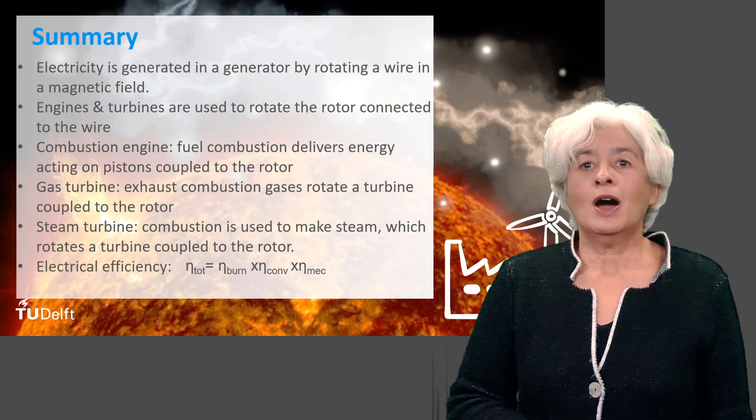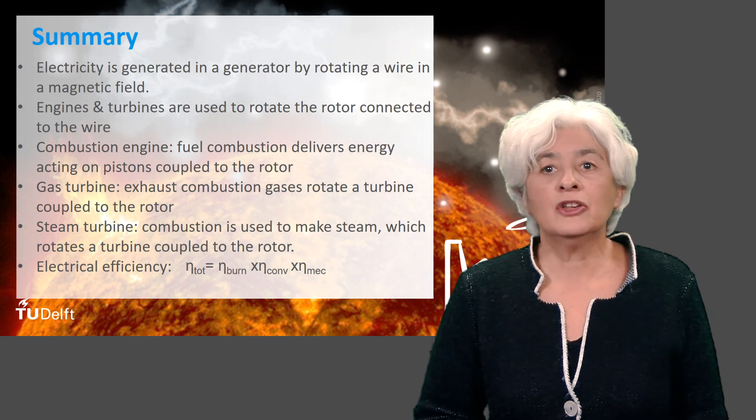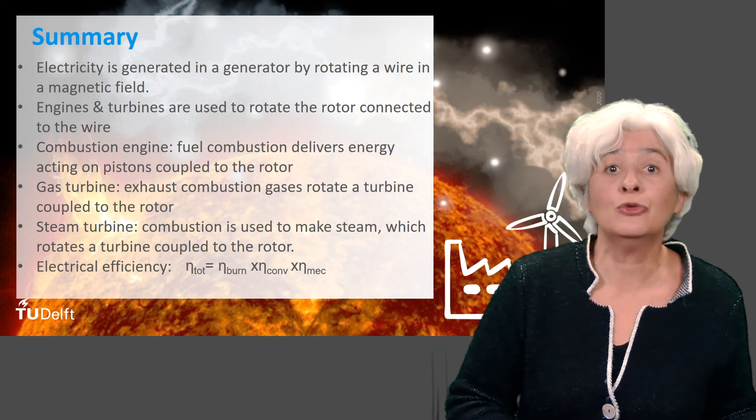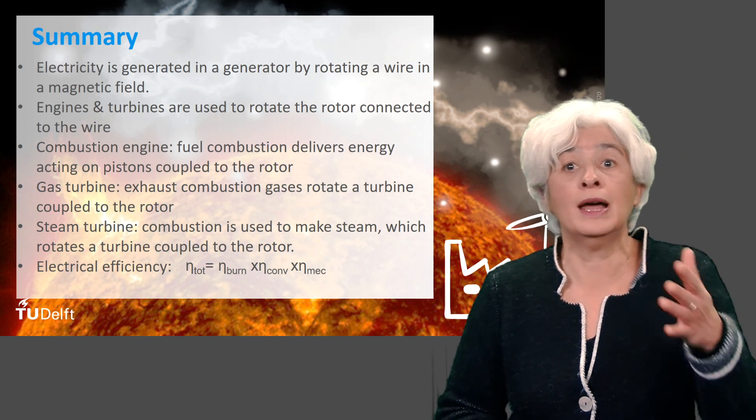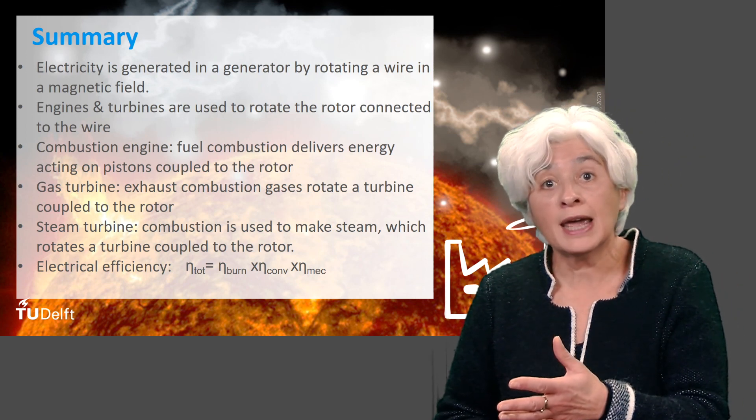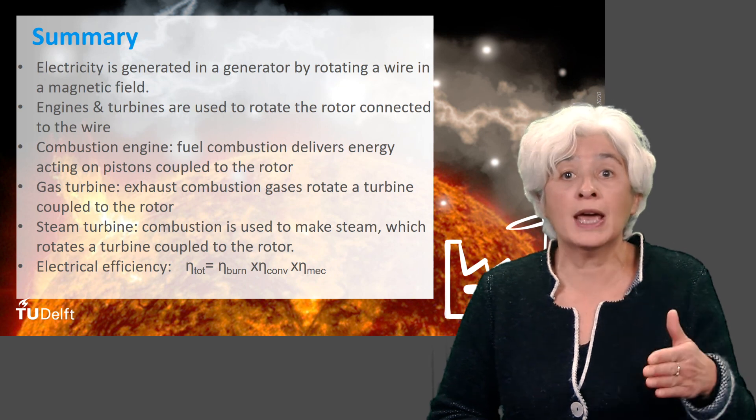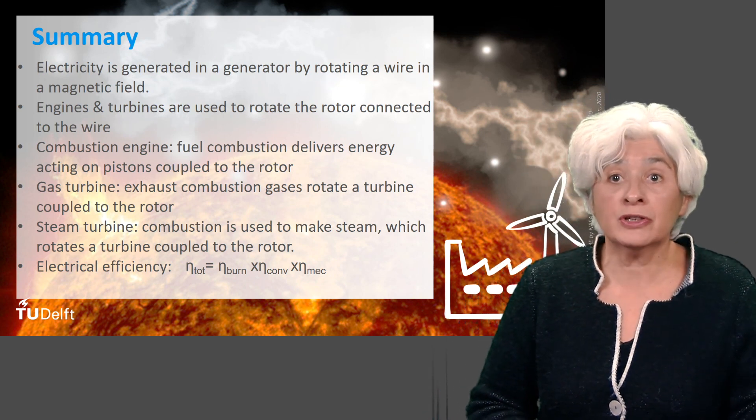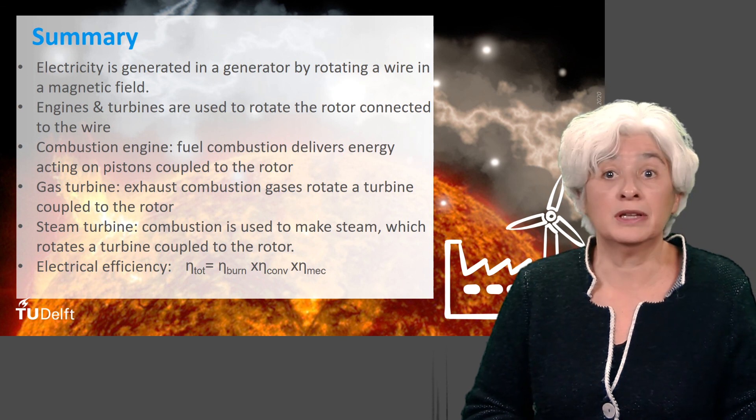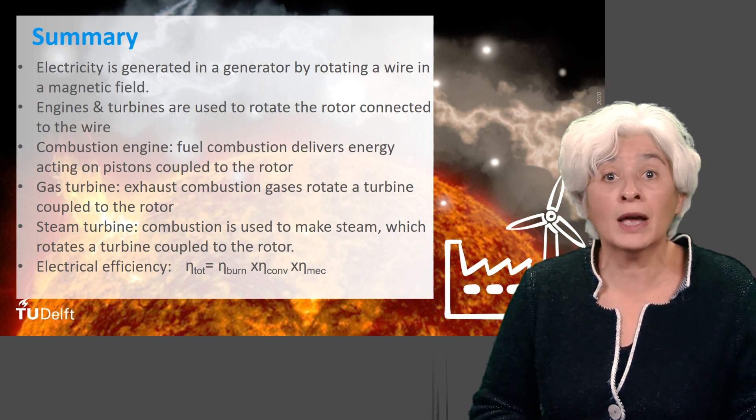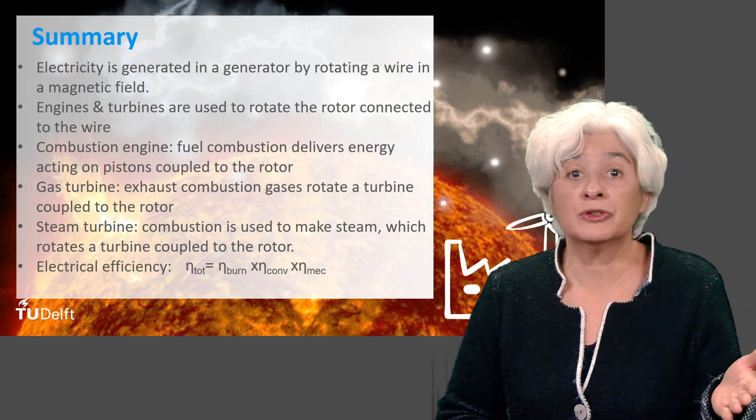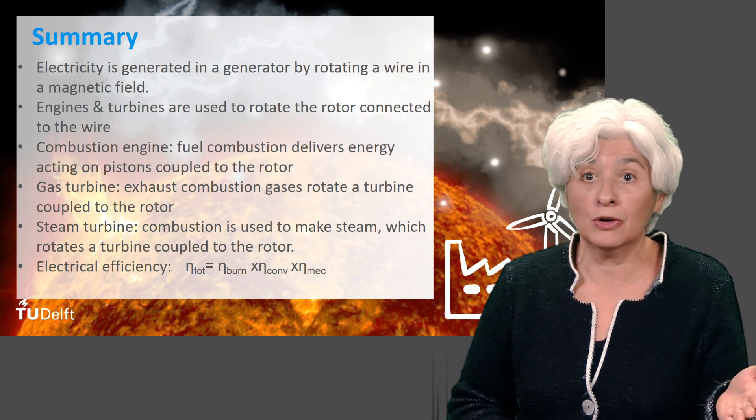In this lecture, you have discovered how electricity is made by converting thermal energy from fuel combustion into work on a rotor into electricity. This is a chain, and in each part of the chain, energy is lost. First, electricity is generated in a generator by rotating a coil of conductive wire in a magnetic field. Then, engines and turbines are used to rotate the rotor connected to the coil.